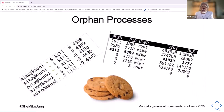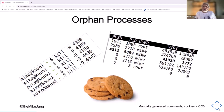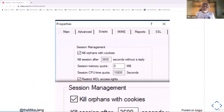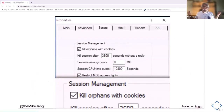For something more technical: if you know the kill -9 command, you know it sometimes leaves orphan processes, and if you're a sysadmin, you might know you can eliminate those orphan processes with cookies. Someone actually decided to combine these facts in a UI. Kill orphans with cookies? Who decided to put that in a UI?